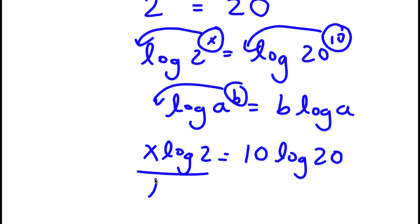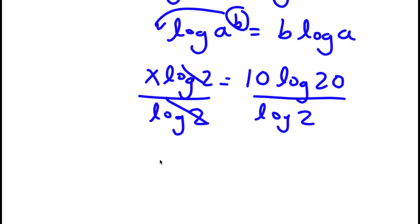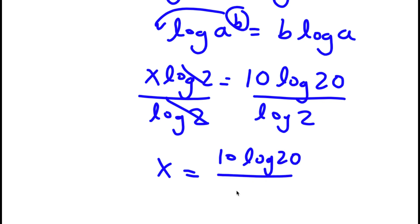Now, if I divide both sides by log 2, these two cancel out, and I'm left with x is equal to 10 times log 20 over log 2.